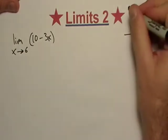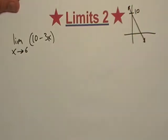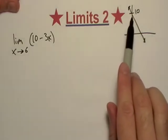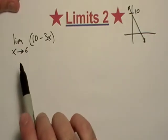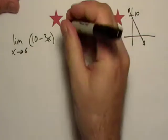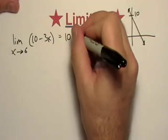It probably looks something like that. This would be y intercept 10. So what we're doing is we're just going to basically find f of 6. We're just going to plug 6 in for x and see what happens.